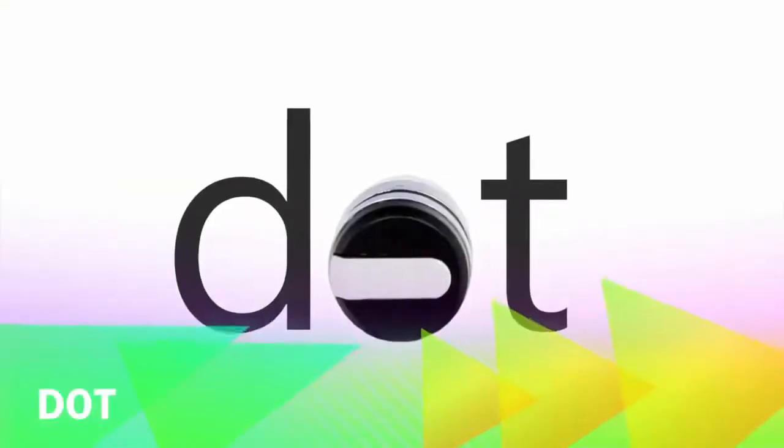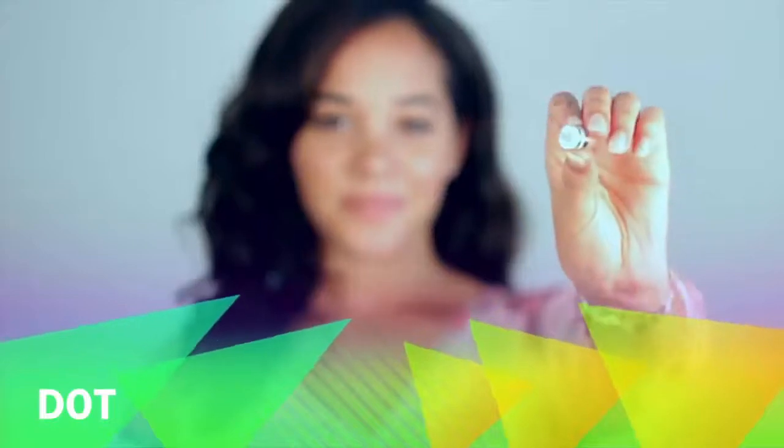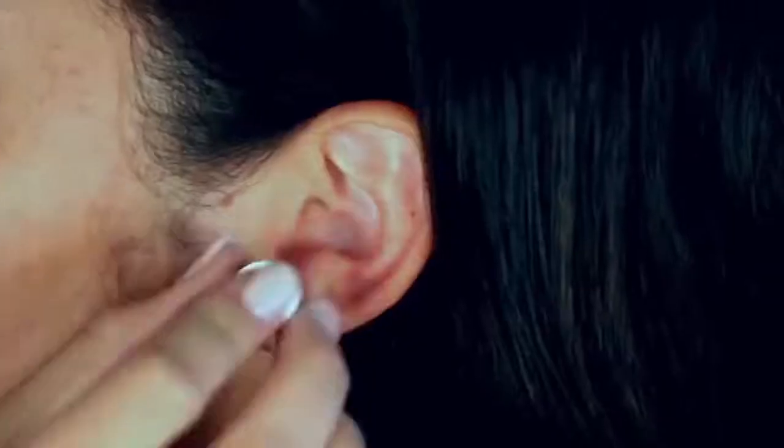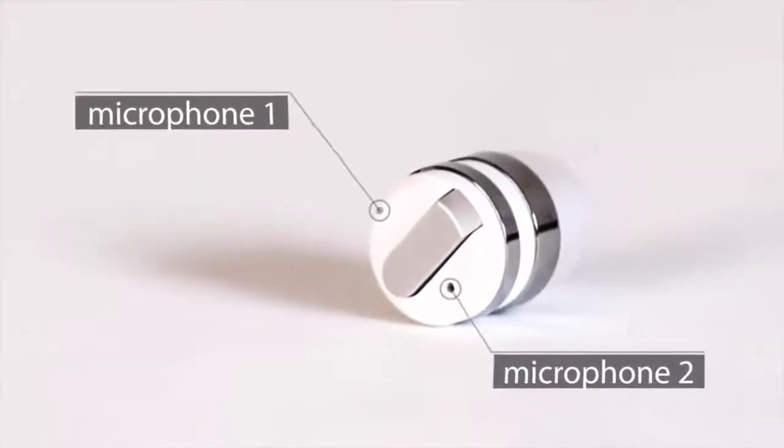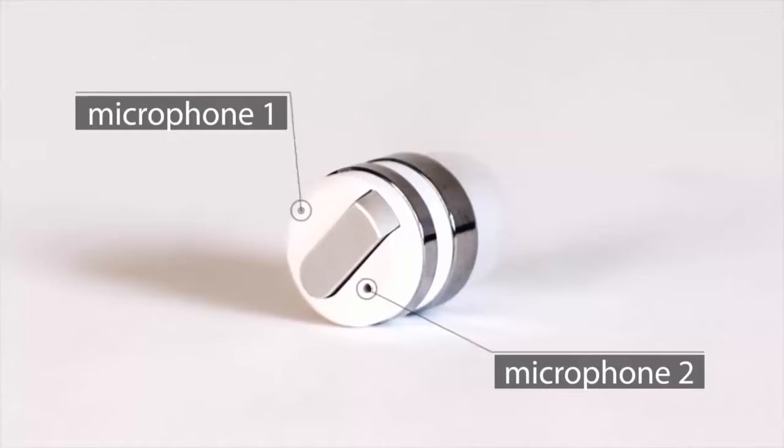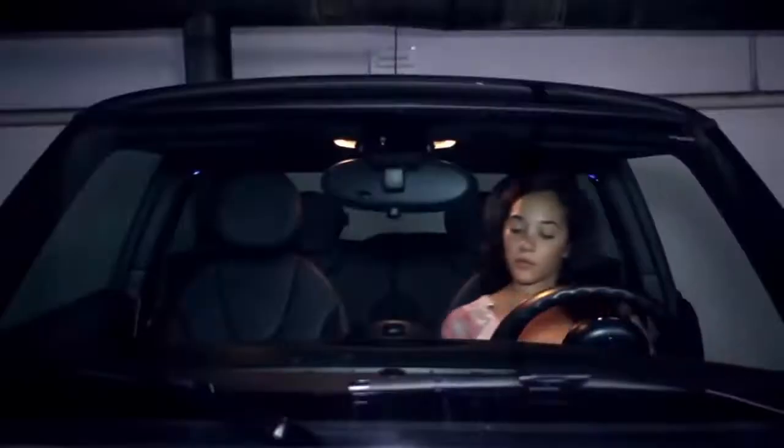This is DOT, the world's smallest Bluetooth earbud. It's so small, it virtually disappears in your ear. Enjoy high-quality sound without the wires. Simple to use, with just a single touch for calls, and a long touch for Siri.